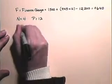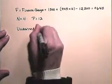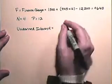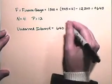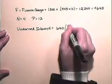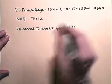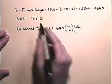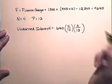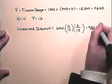So the unearned interest is 640, which is F, times N divided by P times N plus 1 divided by P plus 1, which turns out to be $82.05.